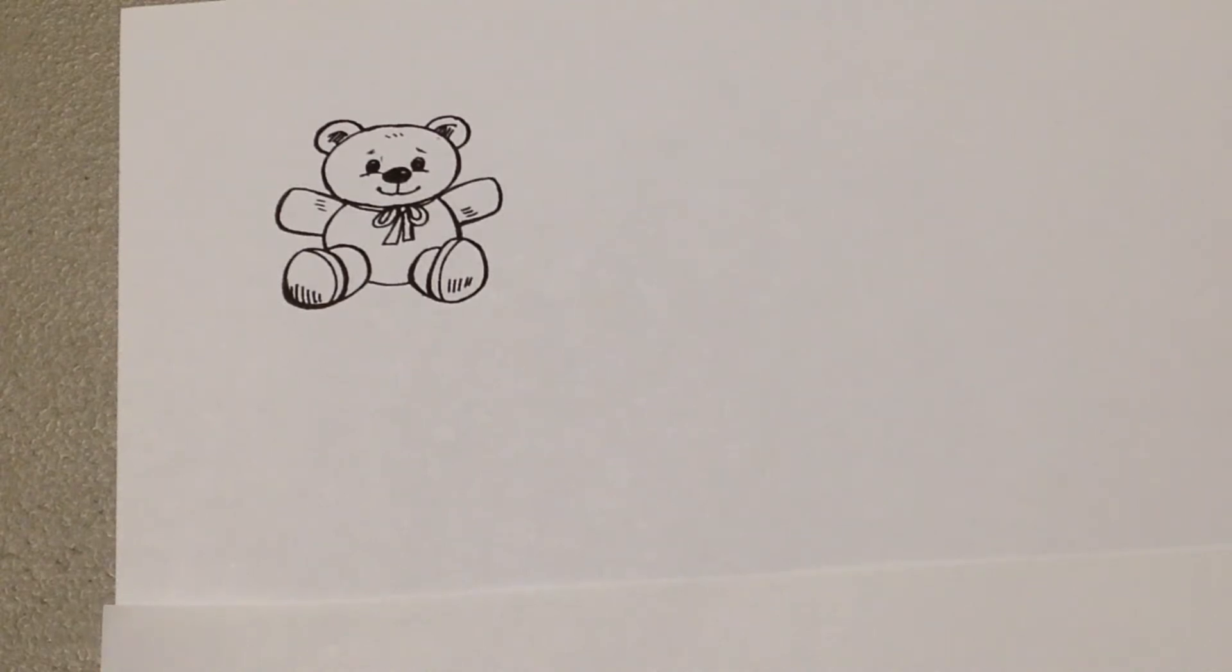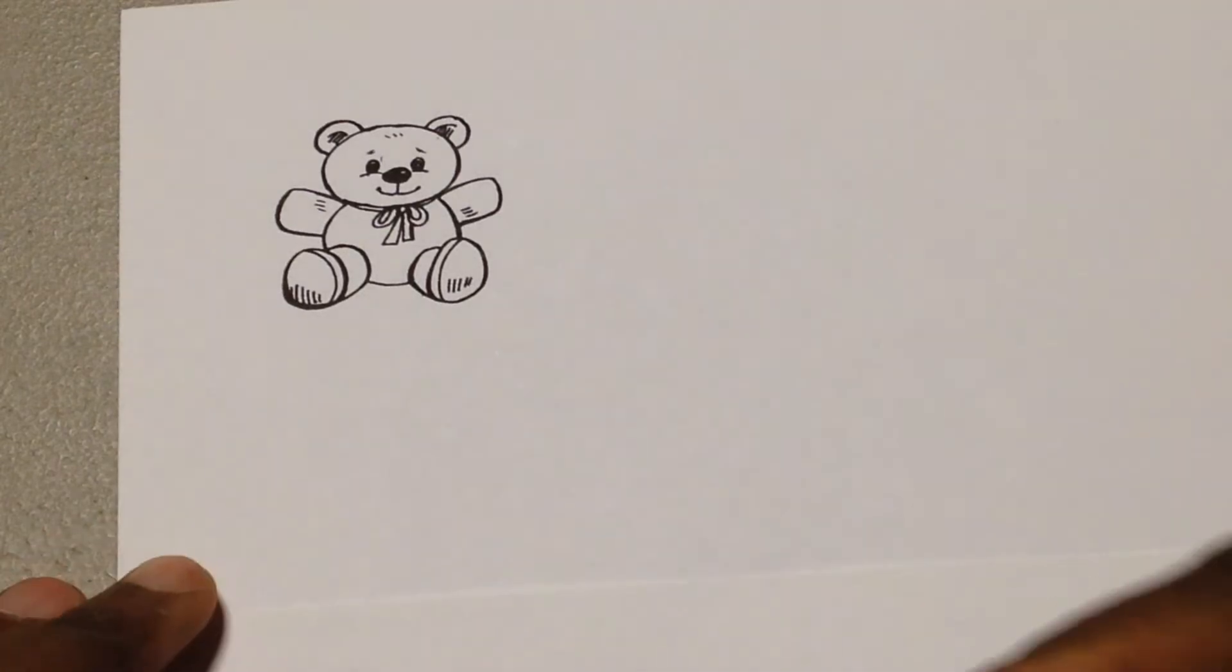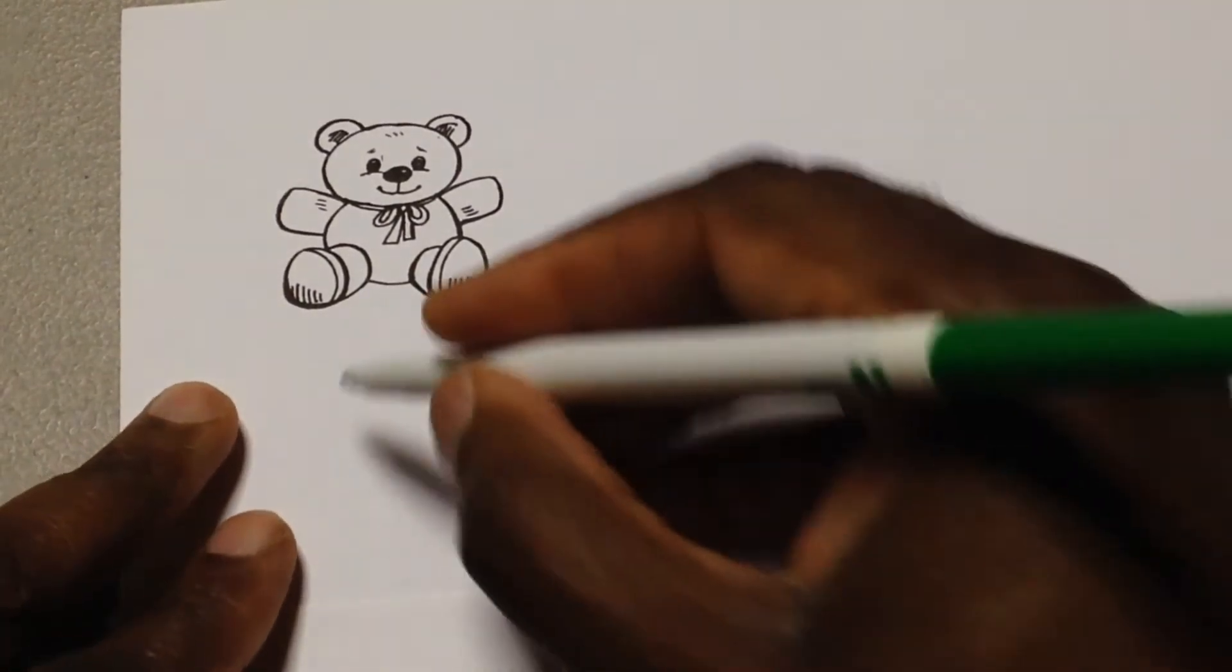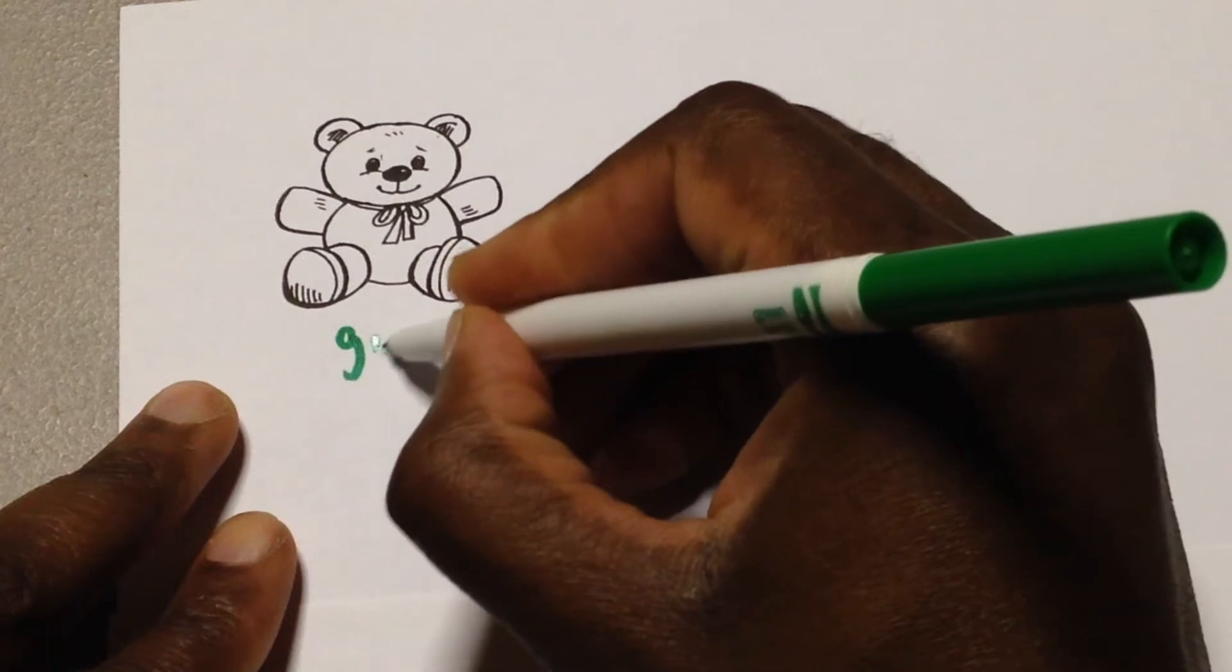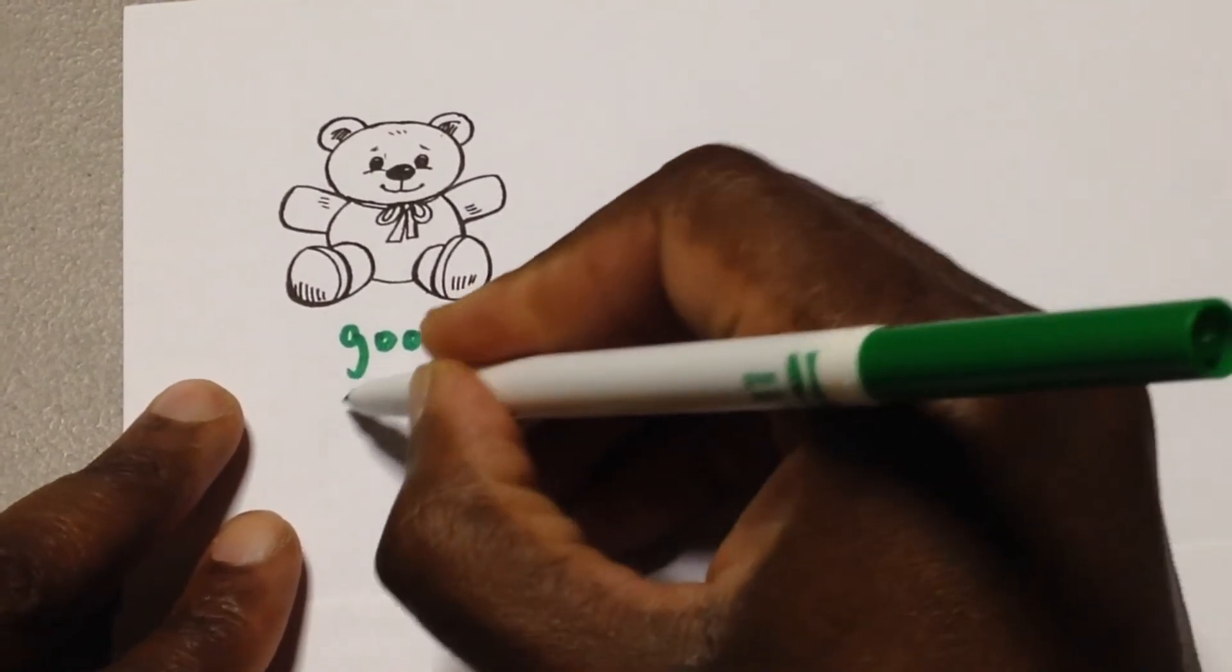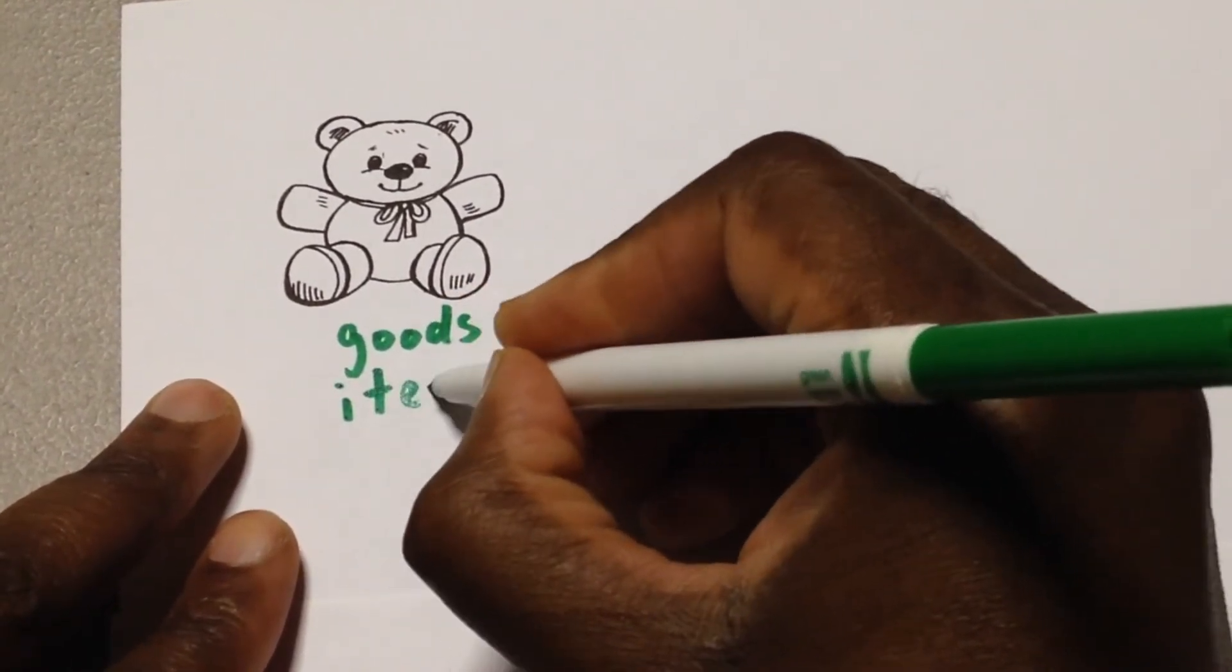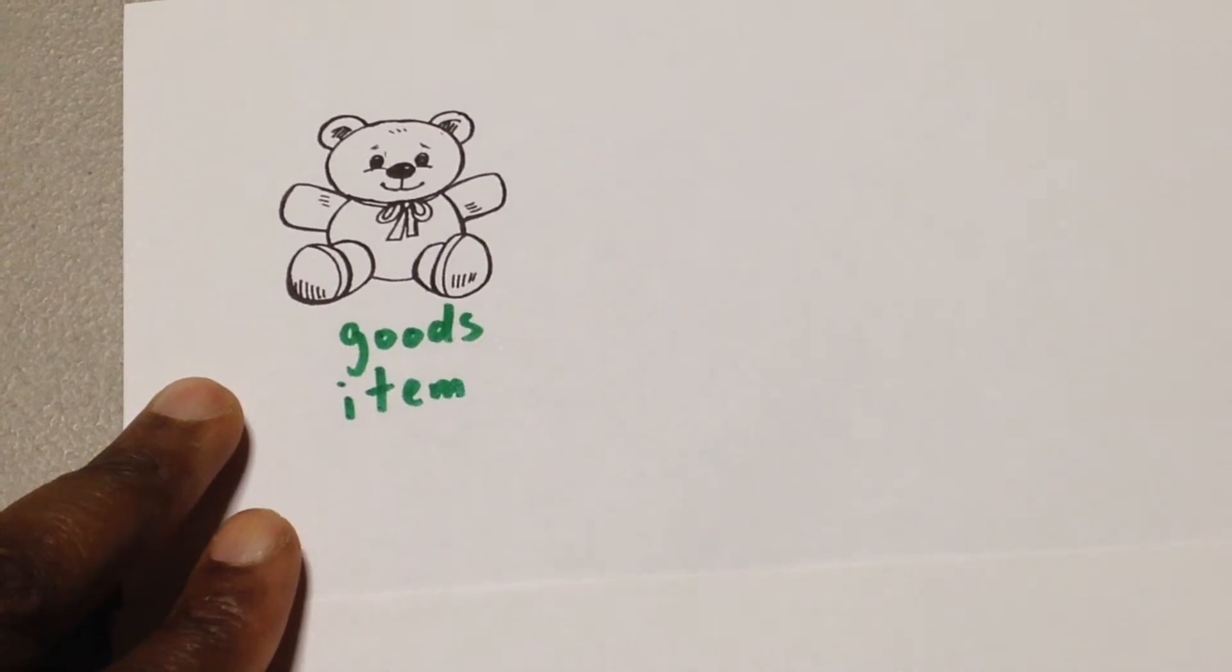Before we begin, let's talk about ourselves as toy store owners. We are in the business of selling toys. Here's one of our items - this is our teddy bear. When we sell something, that's called a goods or the item that's being sold. So our item is this teddy bear.